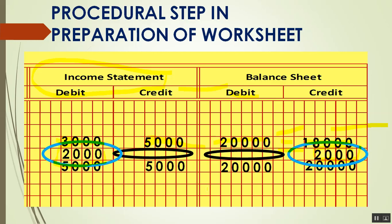To summarize: under the income statement, if credit is higher, it is net income; if debit is higher, it is net loss. For the balance sheet, it is the opposite — if debit is higher, it is net income; if credit is higher, it is net loss. That concludes our discussion of the worksheet.